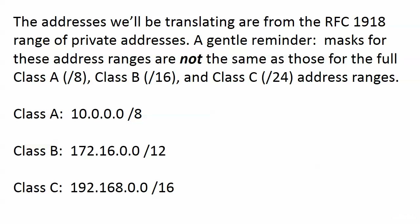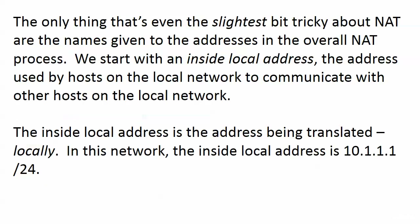The addresses being translated are from the range of private addresses - the RFC 1918 addresses we talked about a while back. A general reminder: the masks for these private address ranges are not the same as those for the full Class A, B, and C address ranges. Your masks for the full ranges are 8, 16, and 24, but for the private address ranges your masks are 8, 12, and 16. You should be very familiar with these private address ranges before you take your exam, and be able to spot a private IP address from any one of those three ranges.